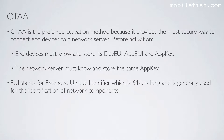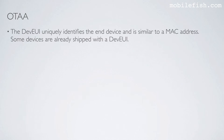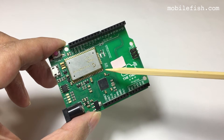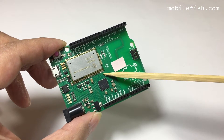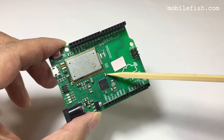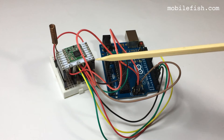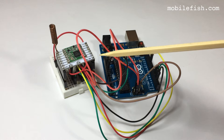EUI stands for Extended Unique Identifier, which is 64 bits long and is generally used for the identification of network components. The DevEUI uniquely identifies the ANT device and is similar to a MAC address. Some devices are already shipped with a DevEUI. For example, this LoRa development board has a built-in DevEUI, and my self-built LoRa development board has no built-in DevEUI.